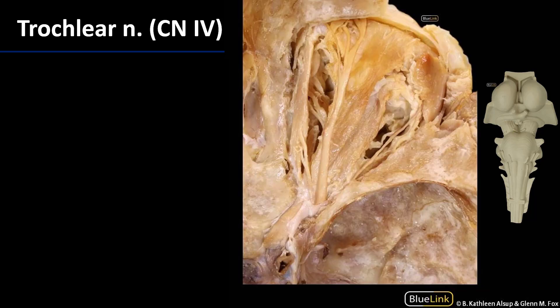We also have the trochlear nerve. The trochlear nerve serves the superior oblique, so that's where you should be looking for it. We can get a fantastic view of the trochlear nerve here. Recall that the superior oblique muscle runs through the trochlea, a cartilaginous pulley attached to the frontal bone — so trochlear, superior oblique.